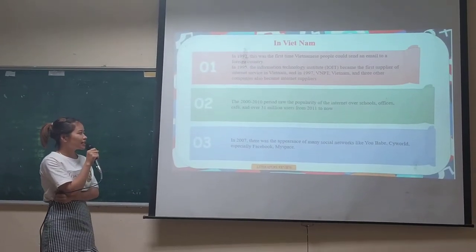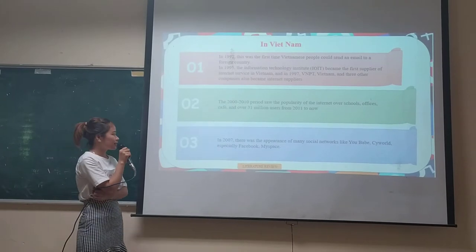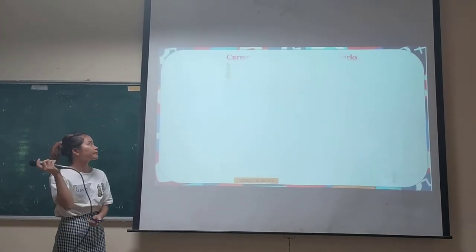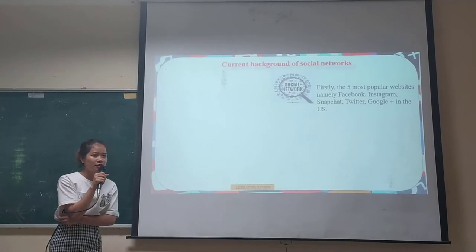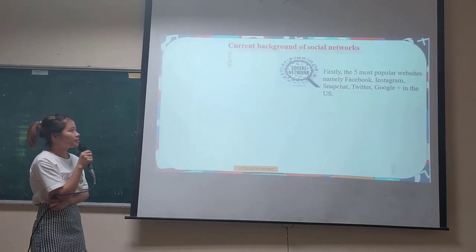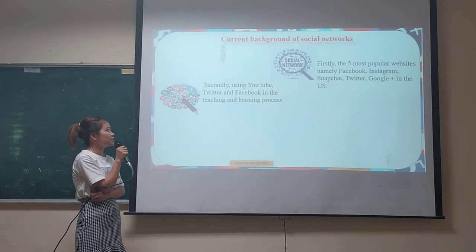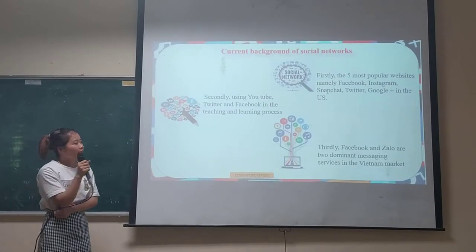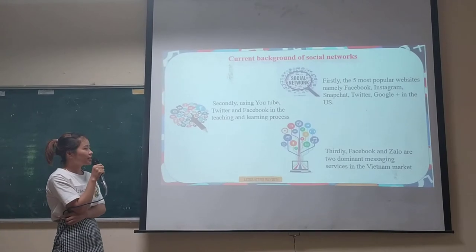In 2007, there was an appearance of many social networks like YouTube, Cyworld, MySpace, and Facebook. The research covers a good background of social networks. One author identifies the 5 most popular websites: Facebook, Instagram, Snapchat, Twitter, and Google Plus in the U.S. A second source highlights the use of YouTube, Twitter, and Facebook in the teaching and learning process. And thirdly, Facebook is cited as the dominant messaging service in the Vietnamese market.